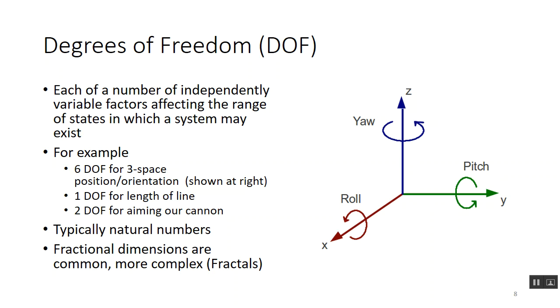Degrees of freedom — some people say you have six degrees of freedom and that's as high as it gets: three dimensions plus rotation on each axis. But more generally, degrees of freedom in modeling is a number — each of a number of independently variable factors affecting the range of states in which a system may exist. For our cannon, we have two degrees of freedom: we can change bearing and we can change elevation.